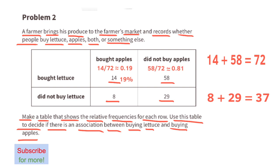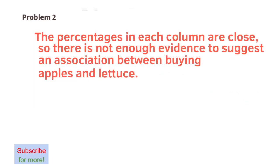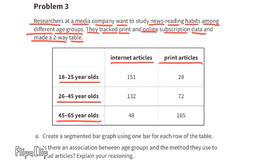58 out of 72 people did not buy apples but did buy lettuce — that's 81% of the people. 8 out of 37 people did not buy lettuce but bought apples — that's 22% of the people. And 78% of the people did not buy apples or lettuce. The percentages in each column are close, so there's not enough evidence to suggest an association between buying apples and lettuce.